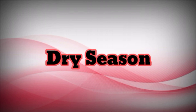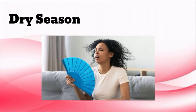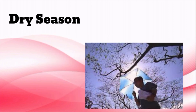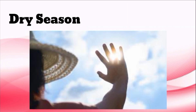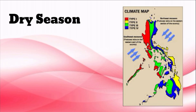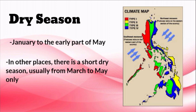The next season in the Philippines is the dry season. We experience very hot temperatures during the dry season. It is locally known as tag-init or tag-tuyot. It is the season when the sun shines brightly and brings a lot of heat. In some places of the country, people experience the season from January to the early part of May. In other places, there is a short dry season usually from March to May only.